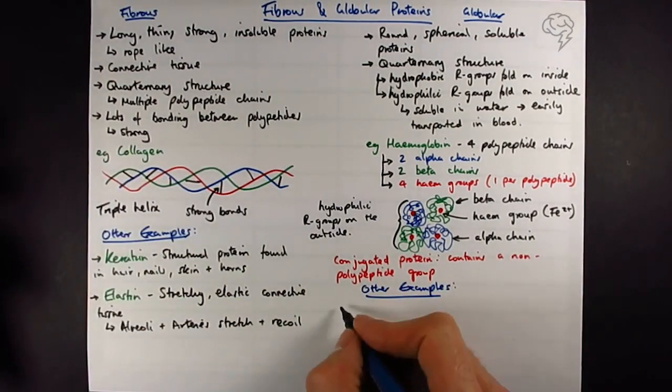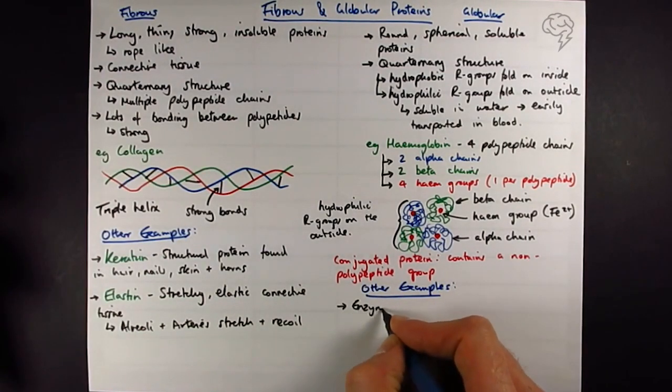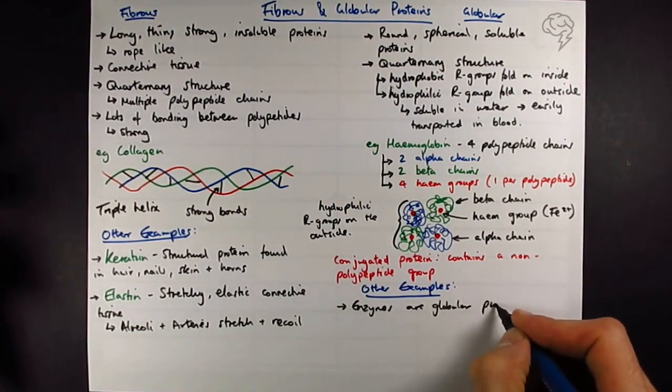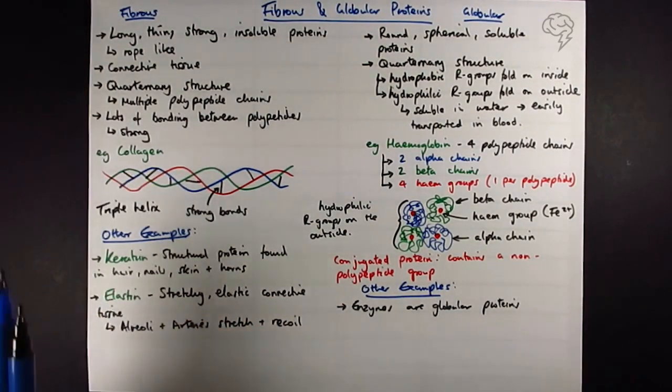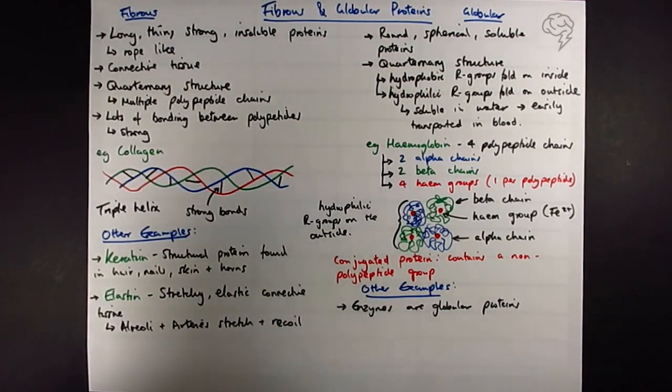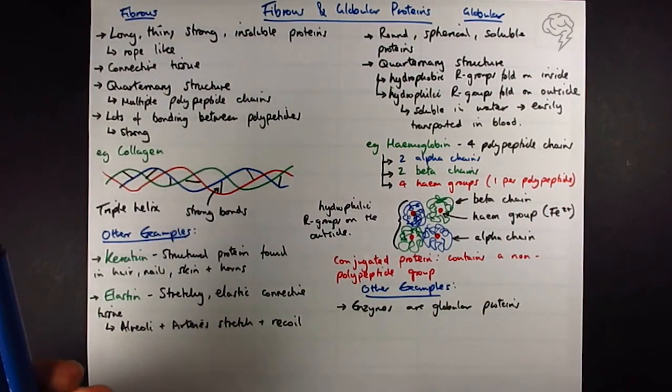Other examples here: enzymes. Enzymes are globular proteins. They need to be soluble, they need to move around in the bloodstream. So they also need a complex three-dimensional shape.